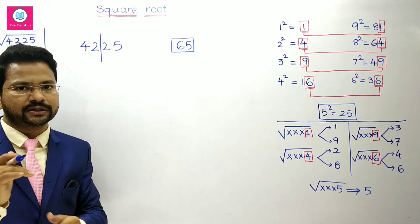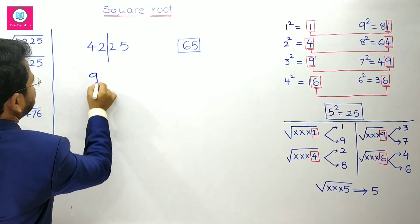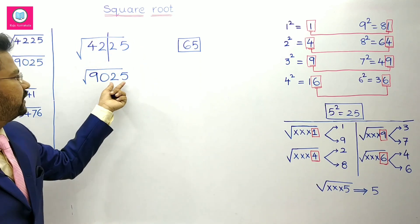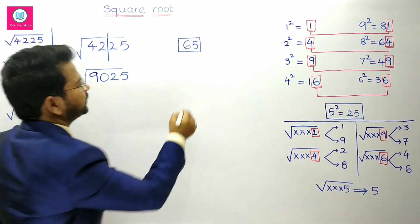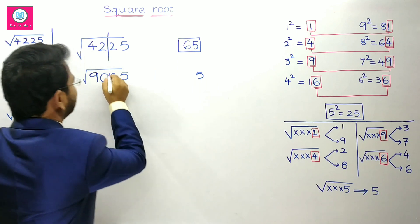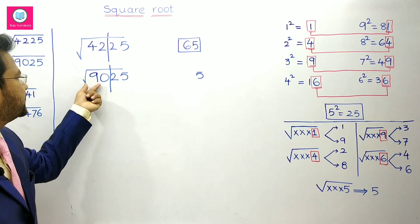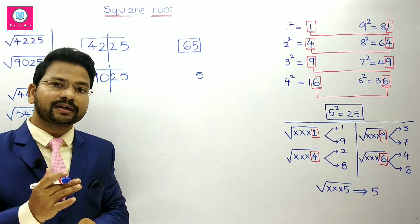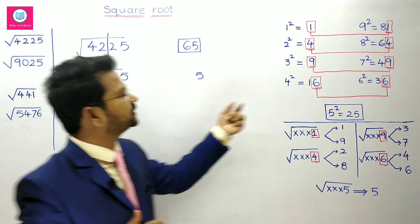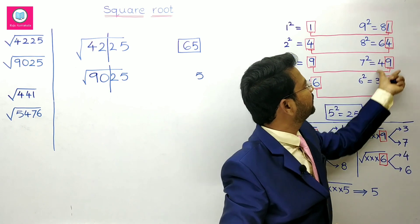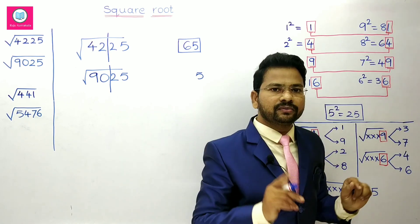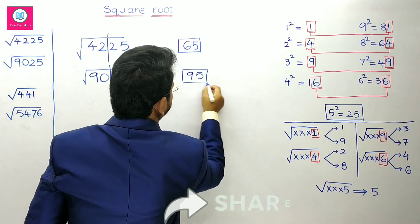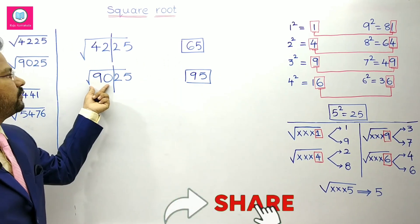One more example: 9025. When the number ends with 5, you take 5 in the units place. Leave the two digits and consider 90. You need to take a smaller number whose square is near to 90. 9 squared is 81, which is near to 90, so we take 9. Therefore, 95 is the square root of 9025.